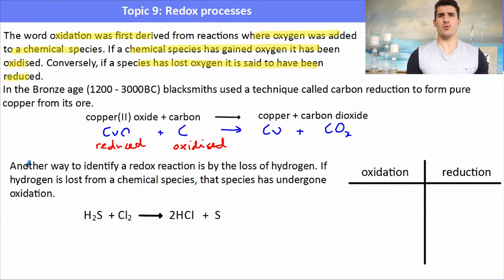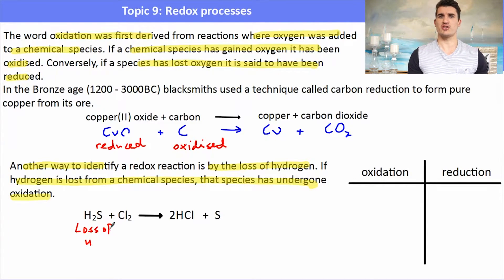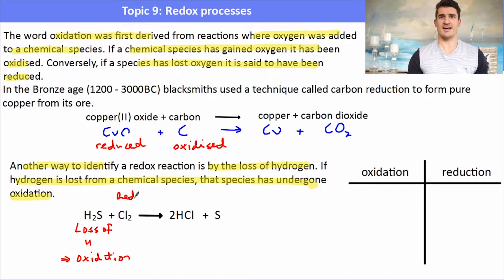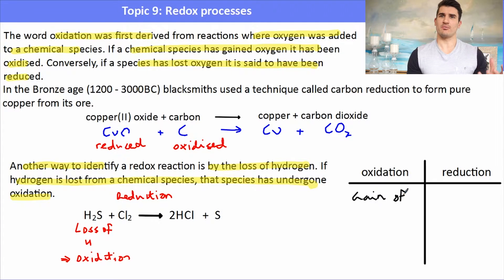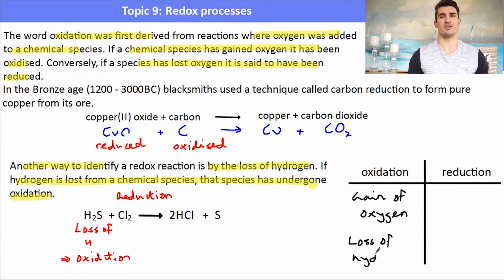Another way to identify a redox reaction is by the loss or gain of hydrogen. If hydrogen is lost from a chemical species, that species has undergone oxidation. In this reaction, hydrogen sulfide loses its hydrogen to form elemental sulfur — that's oxidation. The chlorine gas gains a hydrogen to form hydrogen chloride — that's reduction. So oxidation is the gain of oxygen or the loss of hydrogen; reduction is the loss of oxygen or the gain of hydrogen.